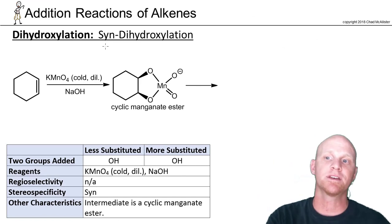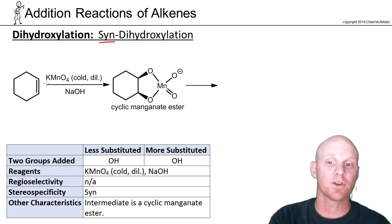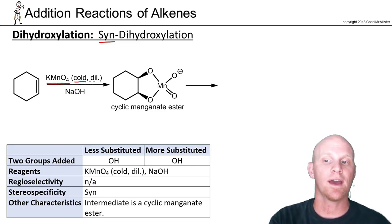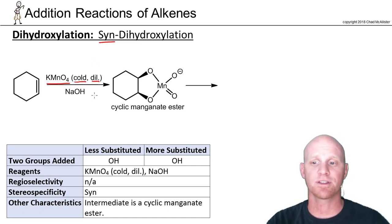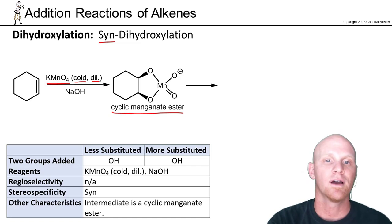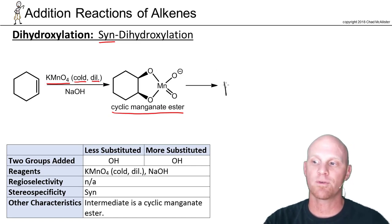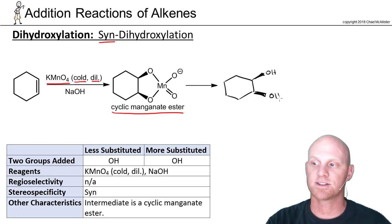The second way to carry out syn dihydroxylation is analogous to the first. Instead of osmium tetroxide, we're going to use potassium permanganate — often specified as cold and dilute. The reason is that if it's hot and concentrated, you get a different reaction, as we'll see later in this chapter. Under cold, dilute, basic conditions, instead of a cyclic osmate ester, we get a cyclic manganate ester, but everything else is analogous. You don't need to know the mechanism; it's shown just to explain why it's a syn addition — both hydroxyl groups end up adding to the same face.